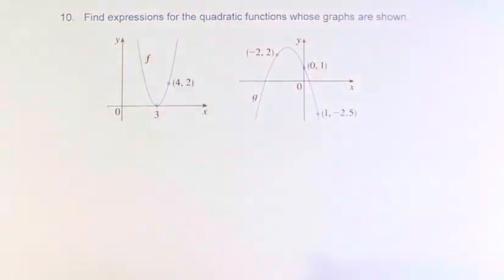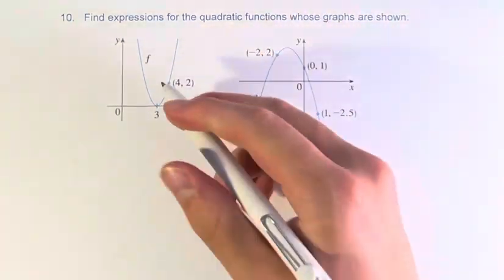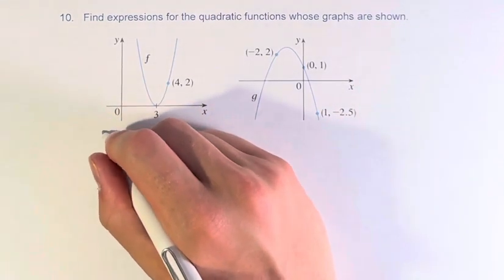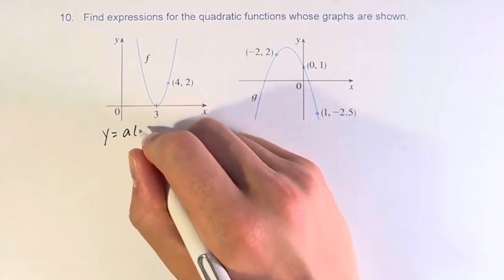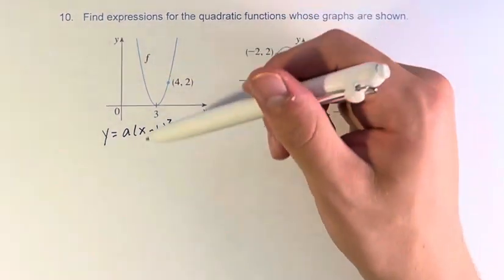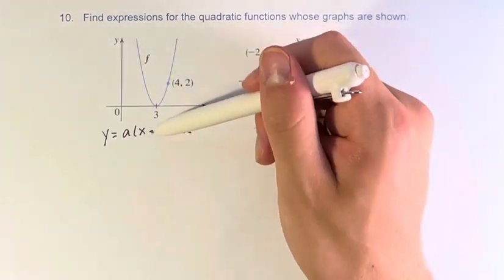Starting with this first one, we're going to use vertex form because we have the vertex, right? The vertex is (3, 0). So when we have our form y equals a times (x minus h) squared plus k, we know that when the function is in this form, it contains the vertex (h, k).